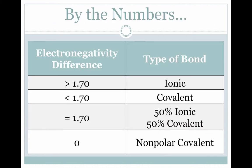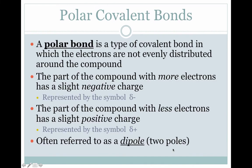Large differences in electronegativities result in an ionic bond. Looking at the numbers: if you have an electronegativity difference greater than 1.7, it's ionic — ionic bonds aren't polar. If it's less than 1.70, you have a covalent bond. If it's exactly 1.0, you have a 50% ionic, 50% covalent — this doesn't happen very often. And if it's exactly zero, you have a non-polar covalent bond.